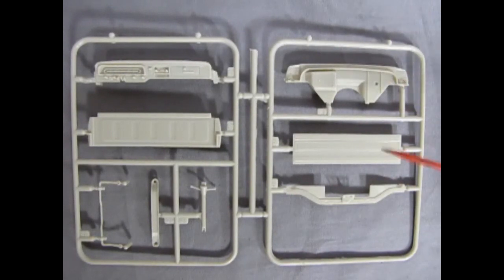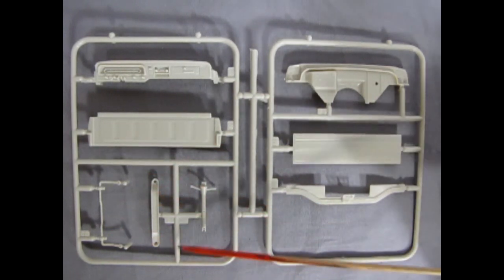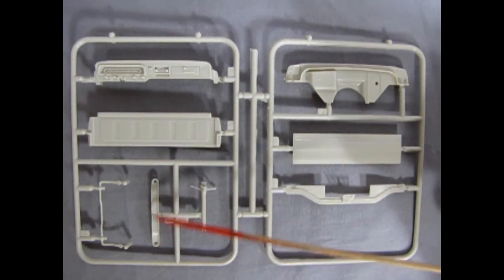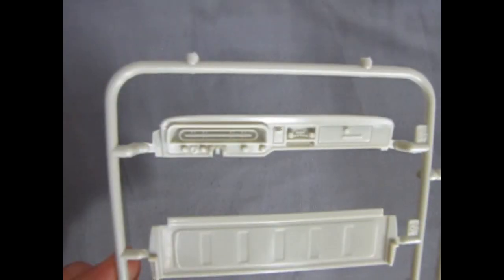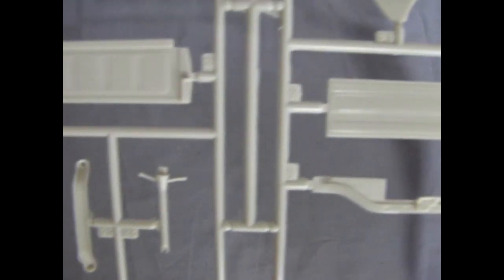Our firewall, rear tailgate, fender brace support, dashboard, inner truck bed, anti-sway bar, and steering column, and front axle support here are all part of this parts tree. And look at that wonderful detail on our dashboard and all these nice components.